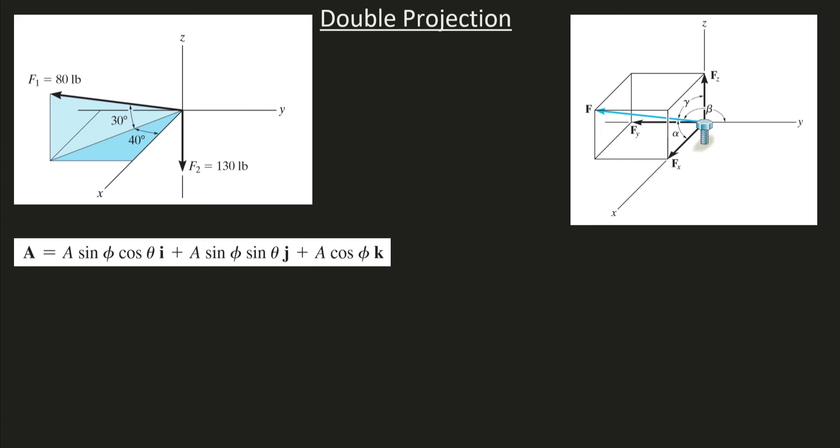So there's two ways of specifying the direction of a vector in 3D space in statics. One way is the direction angles, the alpha, beta, and gamma. That's one way of completely defining which way a vector is pointing in 3D space.